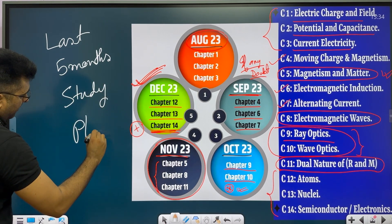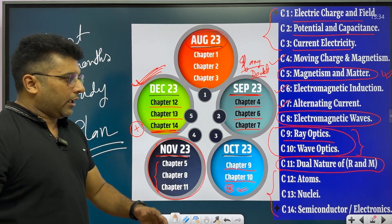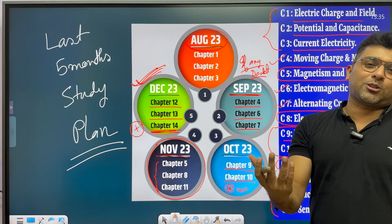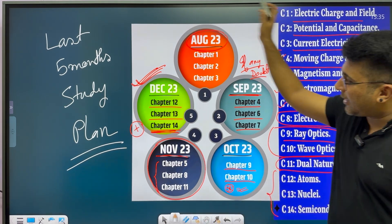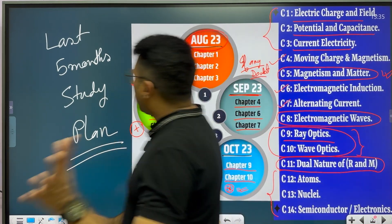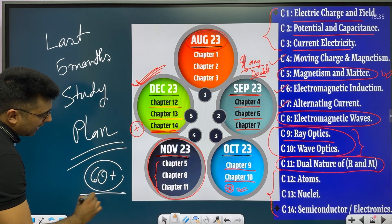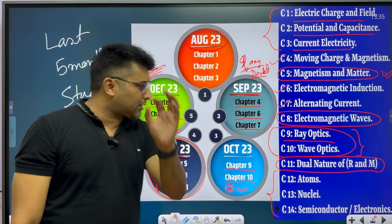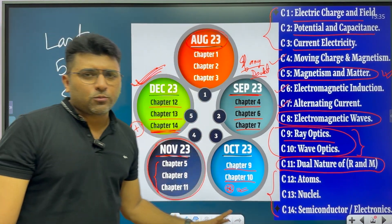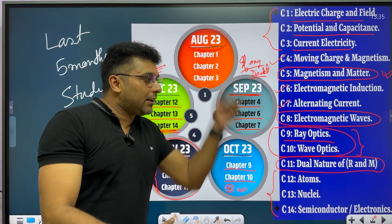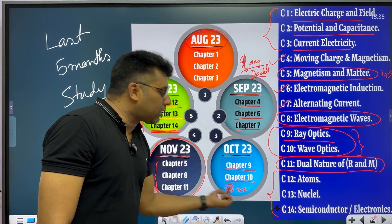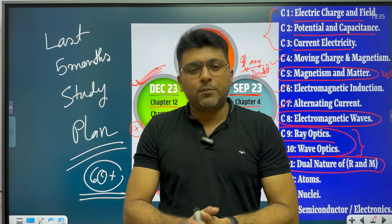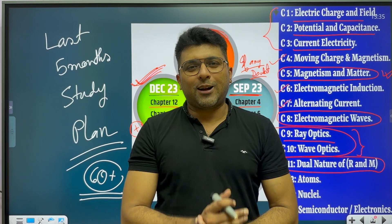So this is the complete five-month study plan. I have 100% confidence that if you follow this plan, you will score a lot in physics — out of 70, you will get around 60 plus marks. That is my guarantee. Please share this video if you found it useful. I will also make a separate video on the practical exam approach. Thank you.